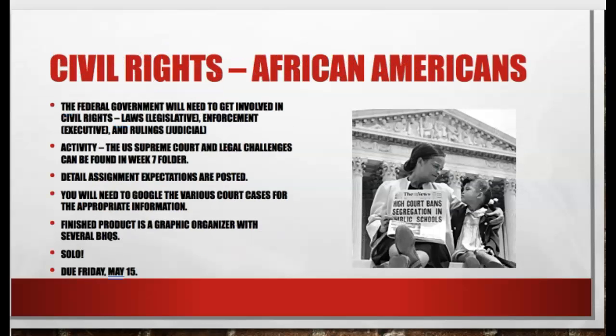And so with that, your next assignment is going to focus on the federal government needing to get involved in civil rights. Grassroots can only work so far, but the federal government is going to have to get involved as well. What does that look like? It looks like the legislative branch is going to have to pass some laws, the executive branch is going to enforce these laws, and the judicial branch is going to need to rule on some of the practices that have been occurring, whether it was de jure or de facto segregation.